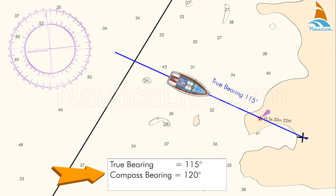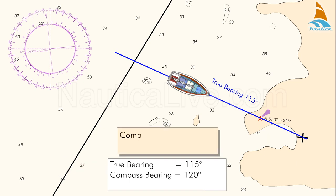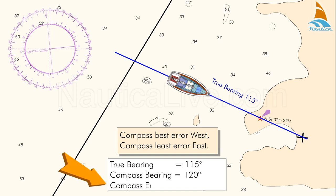As the compass bearing is more than the true one, the error is west. To memorise that, remember: compass best, error west; compass least, error east. To find the error, subtract 120 degrees compass from 115 degrees true. The error of our compass is 5 degrees west.